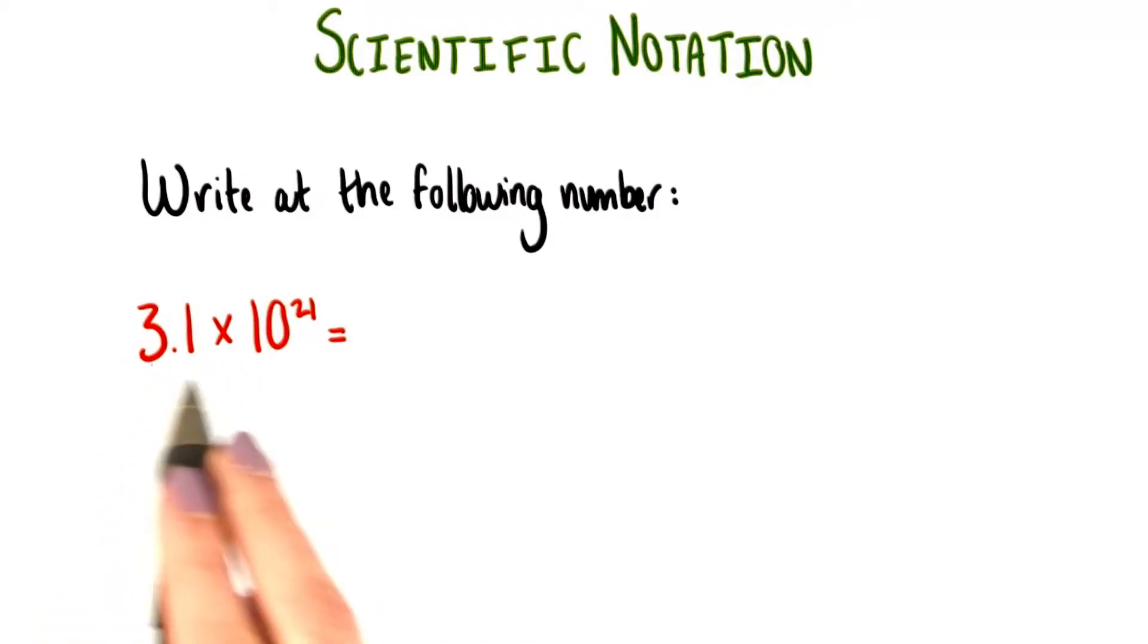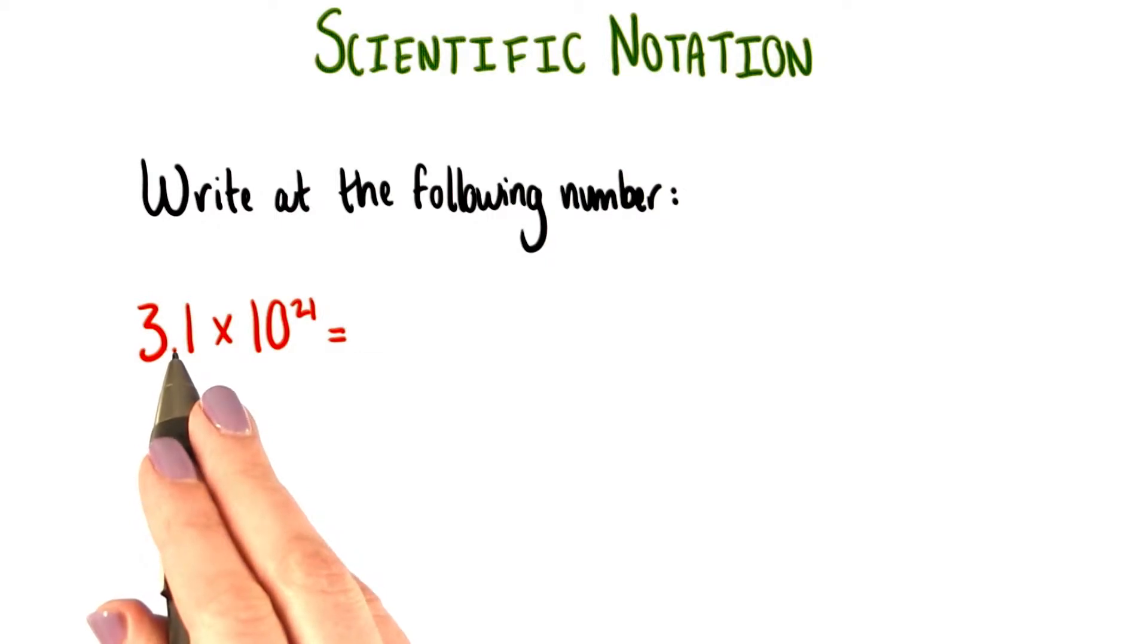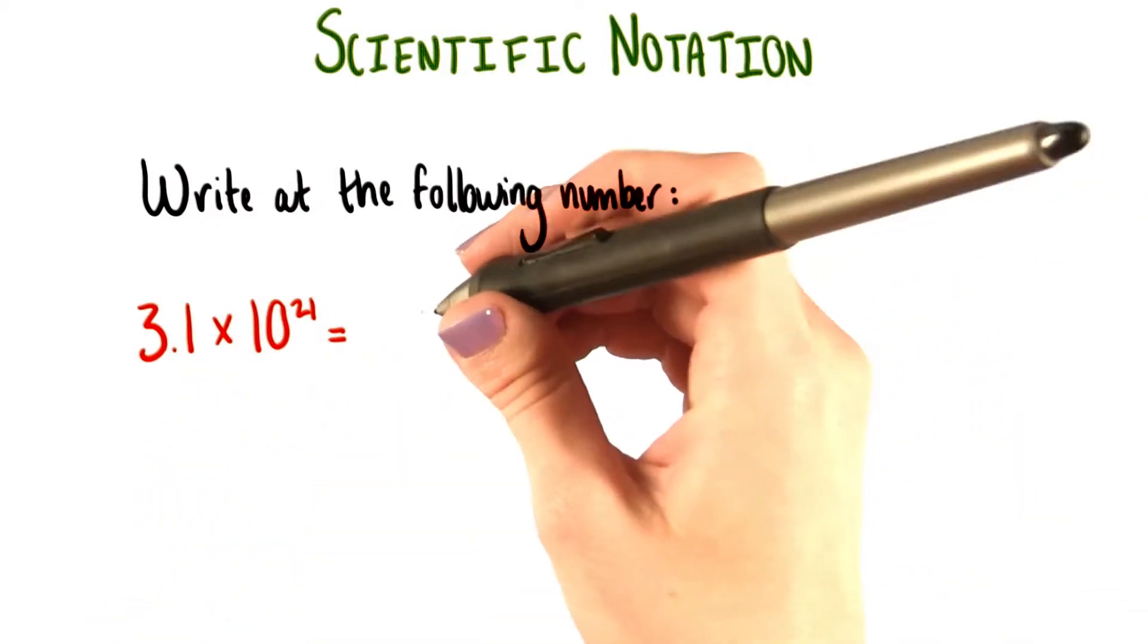We know that we need to multiply 3.1 by 10 twenty-one times. So that means we need to move this decimal point to the right 21 times. Let's do it.